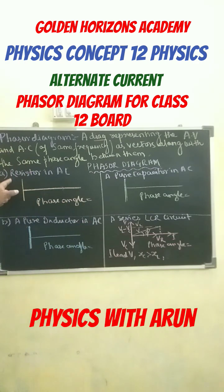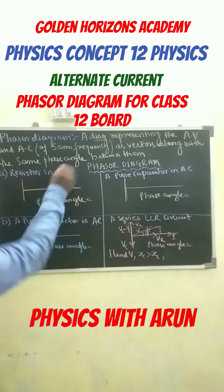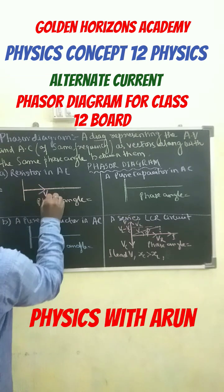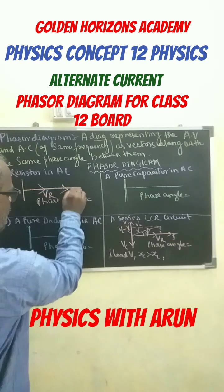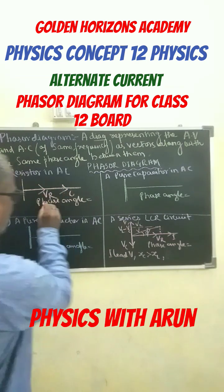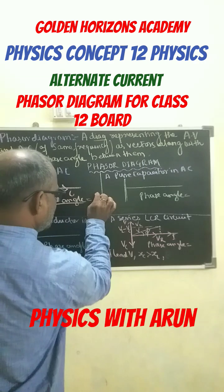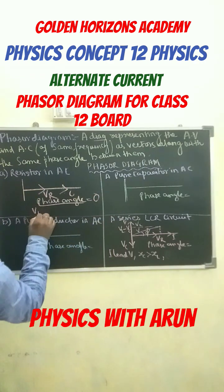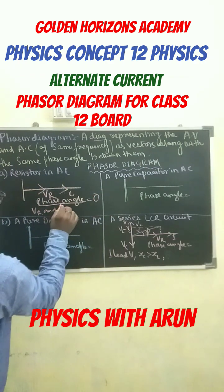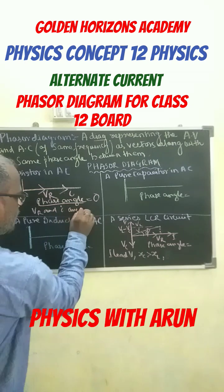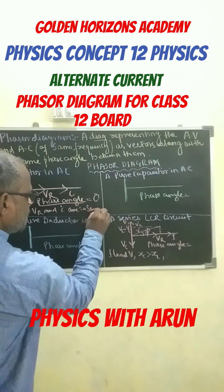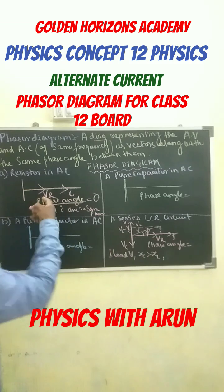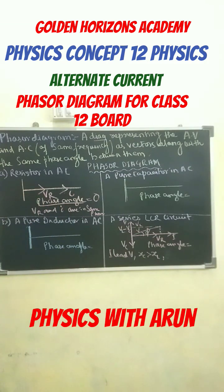To sabse pehle hain resistor ki AC. To resistor ki AC me, yaha par rakha hua hain Vr, aur yeh hain I. So here the phase angle is zero, and Vr and I are in same phase.